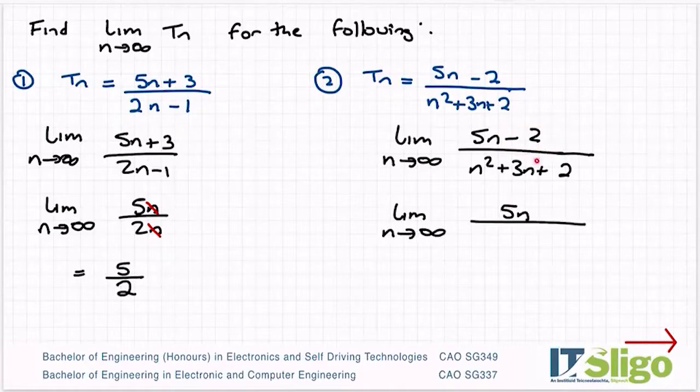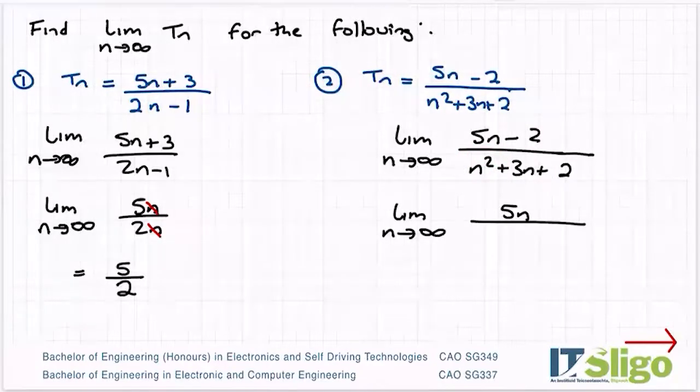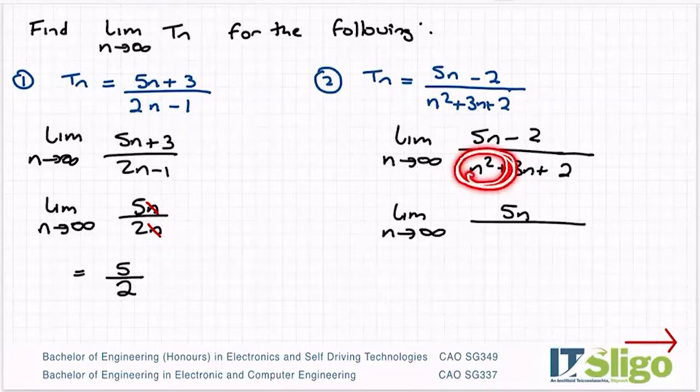So I can write the top as 5n. Now on the bottom, the plus 2 is going to have no bearing at all. The other thing of note is that n squared is much, much bigger than an n term. So really on the bottom, the overarching term is the n squared.